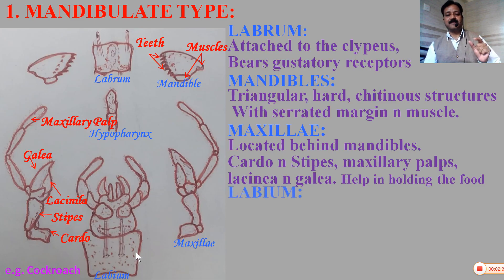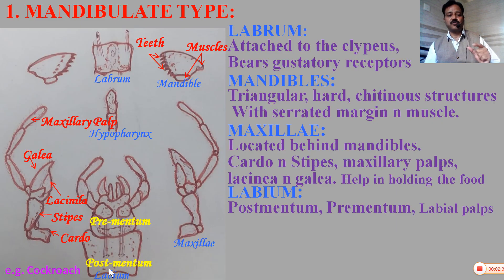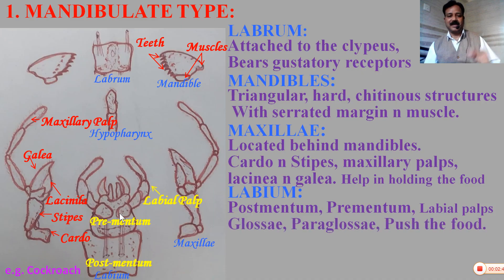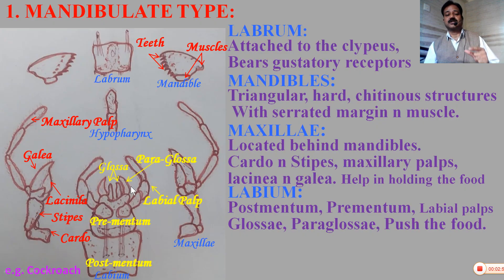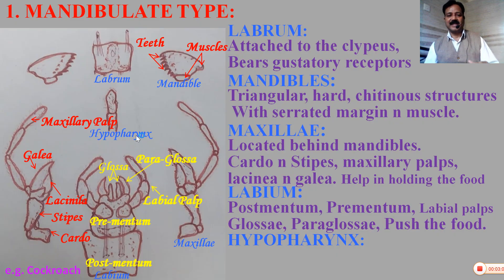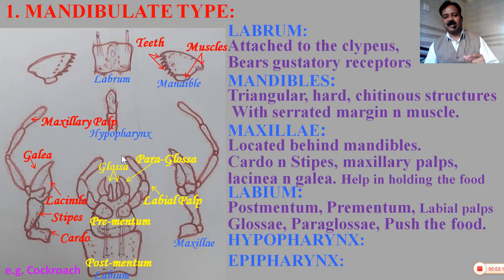Labium is the lower lip. The lower lip consists of two major parts: postmentum and prementum. Postmentum is a basal plate; prementum is attached over the postmentum. Prementum bears a three-segmented structure called the labial palp, and at the inner side there are two structures called glossa and paraglossa. In the mouth part there is also the hypopharynx, a tongue-like structure, along with the epipharynx present at the base of the labrum, which is important for tasting the food material.